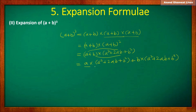Now compute each product separately — monomial with trinomial and monomial with trinomial. Multiply a with a squared, a with 2ab, and a with b squared. Then multiply b with a squared, b with 2ab, and b with b squared.